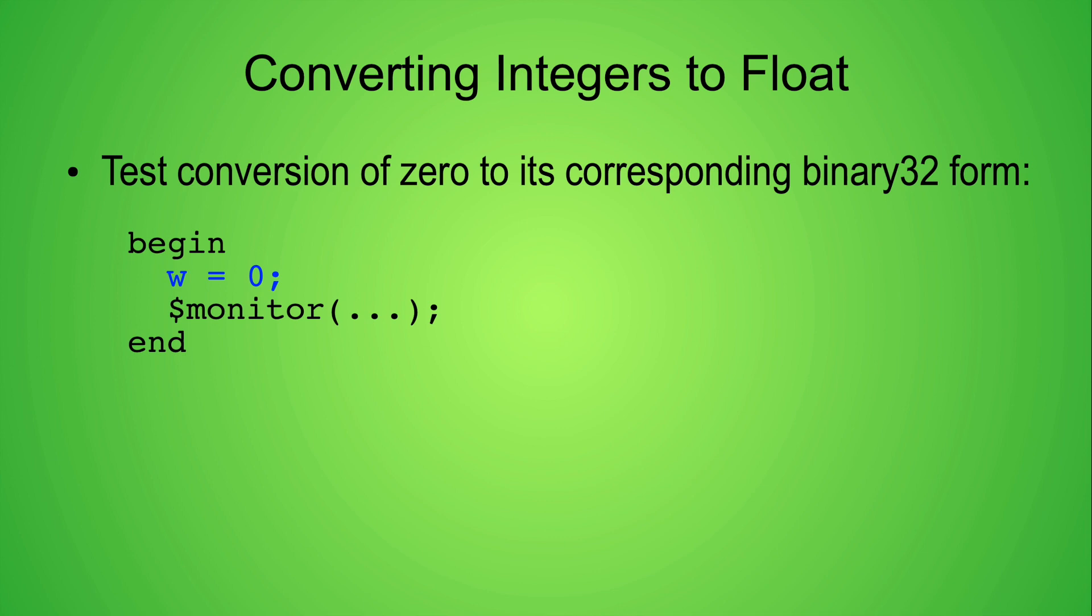The first test is triggered in the initial block which declares the $monitor statement. Here the input integer is set to zero. The output for all four rounding modes must be the binary32 positive zero value, and the inexact flag must be false.